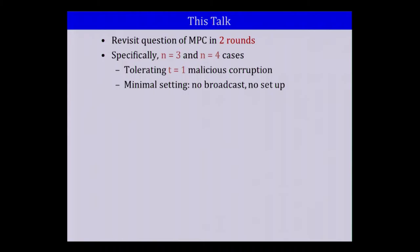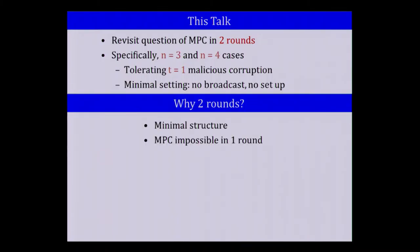In this talk, we revisit the question of MPC in two rounds. Specifically, we'll be looking at settings where n equals three and n equals four, tolerating exactly one malicious corruption, and we want our protocols to work in a minimal setting — no broadcast channel, no setup, nothing. The reason for two rounds is that we are trying to replicate the minimal structure of the ideal model protocol: just an input contribution step and an output delivery step.